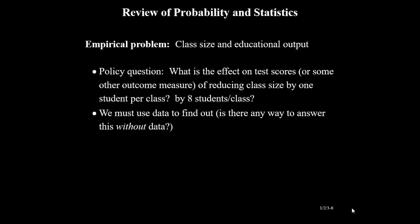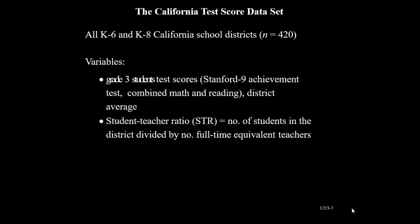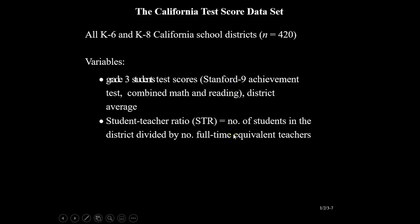So we need data. We have two variables. We have grade three students' test scores, based on their combined maths and reading score — district average. We have 420 districts. We also have student-teacher ratio, that is the number of students per class divided by number of teachers — that is your class size.